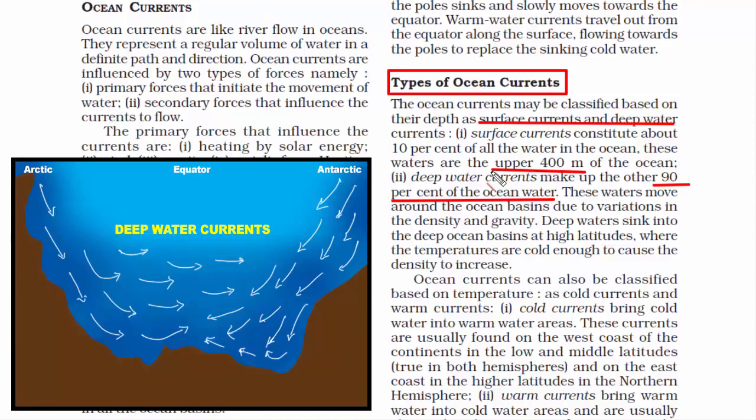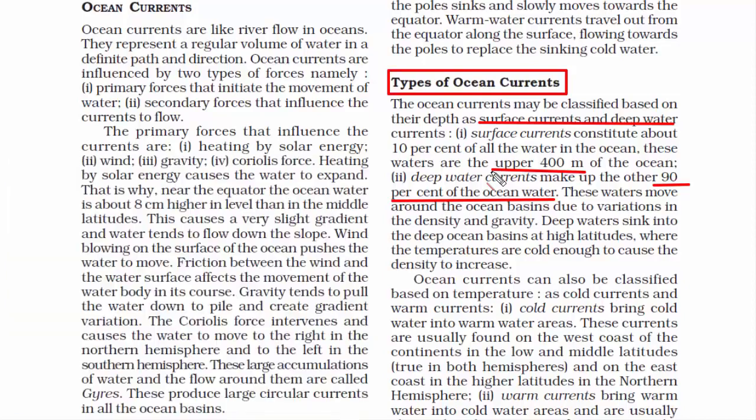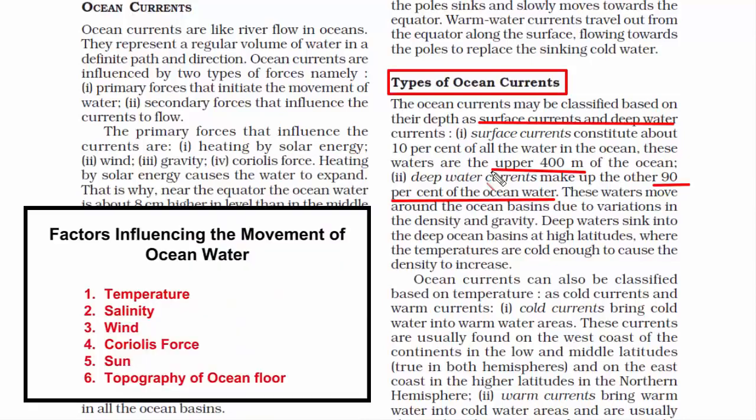Deep water currents make up the other 90% of ocean water. These are water movement patterns below the ocean surface and do not have any direct influence of the wind. Deep currents are formed due to variation in the density of seawater in terms of temperature and salinity.